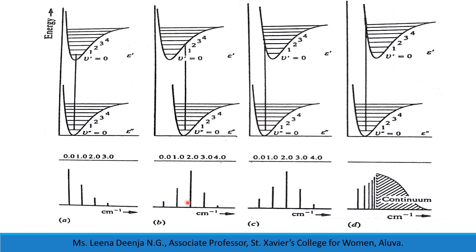The other transitions, that is 0 to 3 and 0 to 4, will have intensities gradually decreasing from the 2,0 transition. And the other transitions from 0 to 1 and 0 to 0, their intensities will also be in rapidly decreasing order.